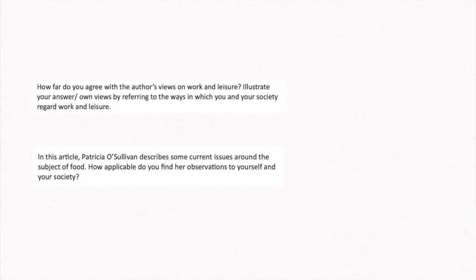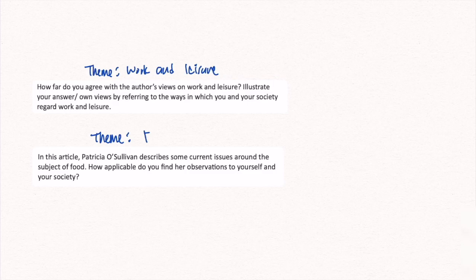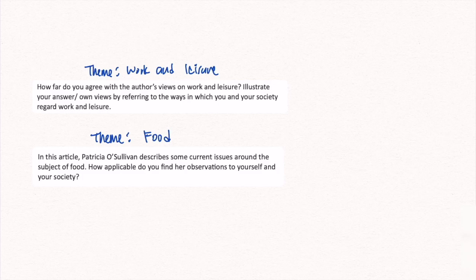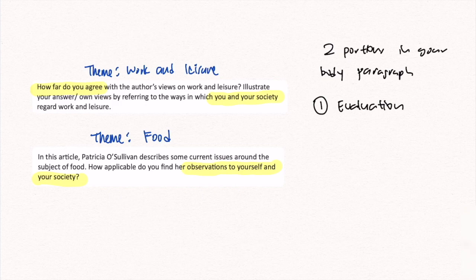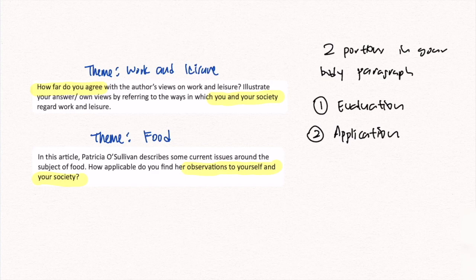Now that we know the purpose of the AQ, how do we write our answer? Looking at two sample AQ questions — one on work and leisure, another on food — you can see what they have in common. Both require you to evaluate the author's arguments and link them back to your society. The first question asks how far you agree with the author's views on work and leisure, while the second asks how applicable the observations are to your society. There are always two portions in the AQ: evaluation, where we assess the writer's arguments, and application, where we apply the writer's ideas to the context of our society.